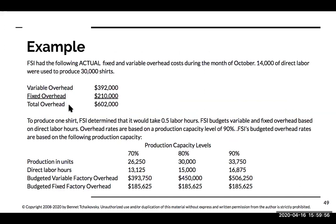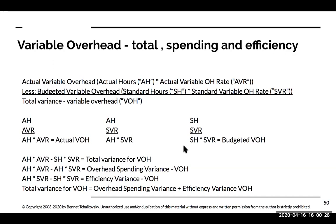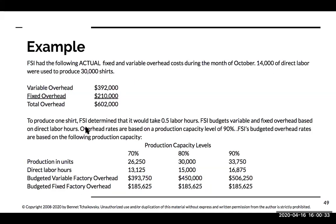Going back over to our example, FSI has the following actual fixed and variable overhead costs. For this video, what we're going to be focused on is what I actually spent on variable overhead versus what I budgeted. I budgeted $450,000. FSI budgets variable and fixed overhead based on direct labor hours, so direct labor hours is our driver.